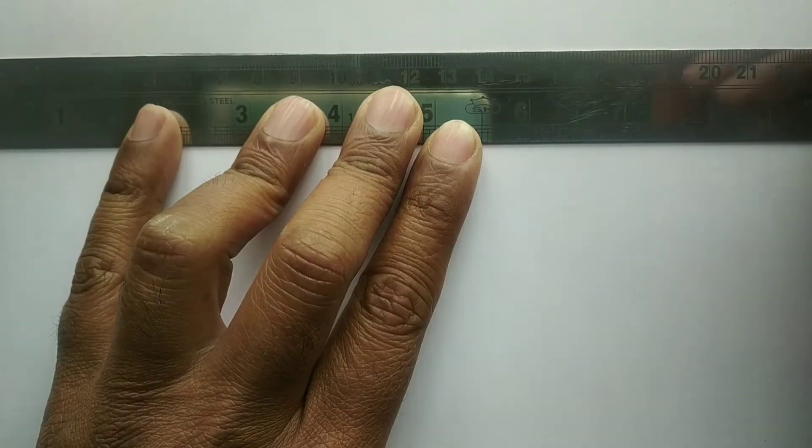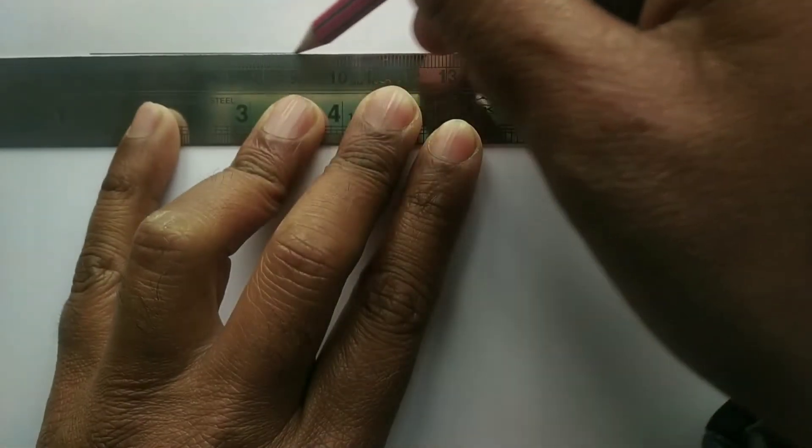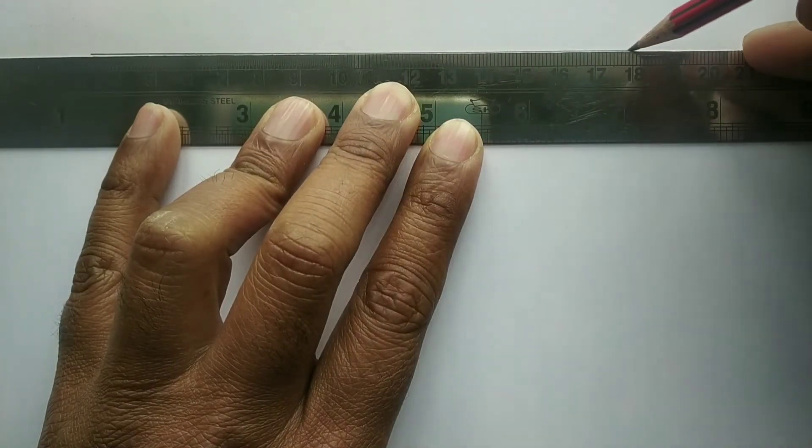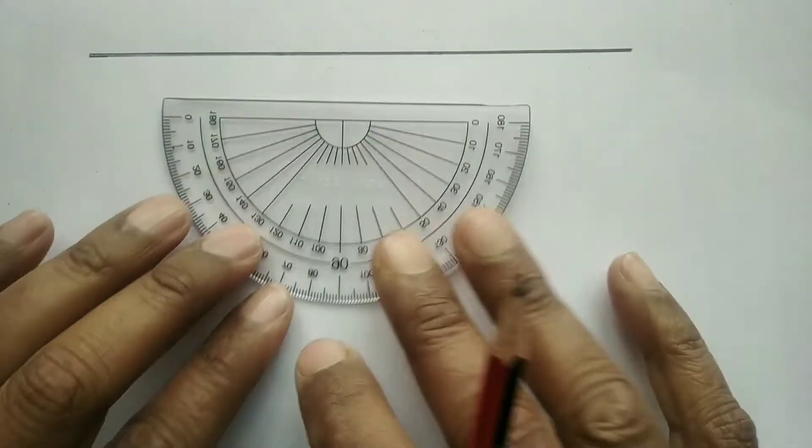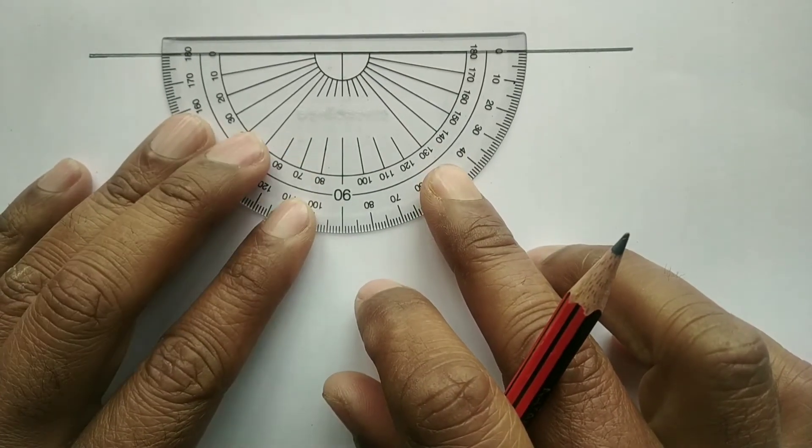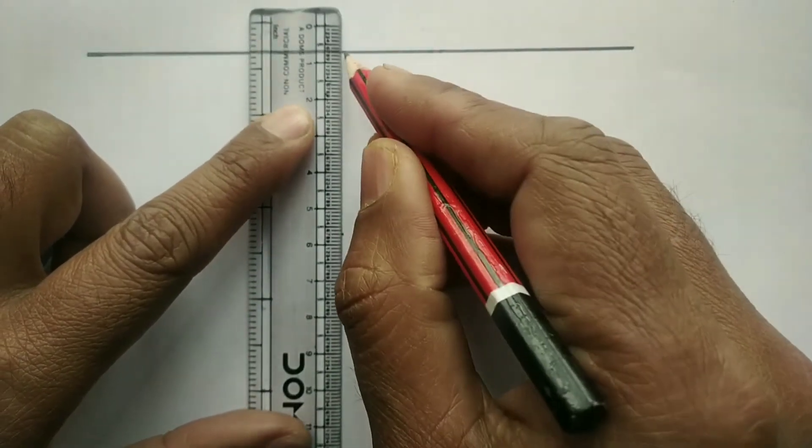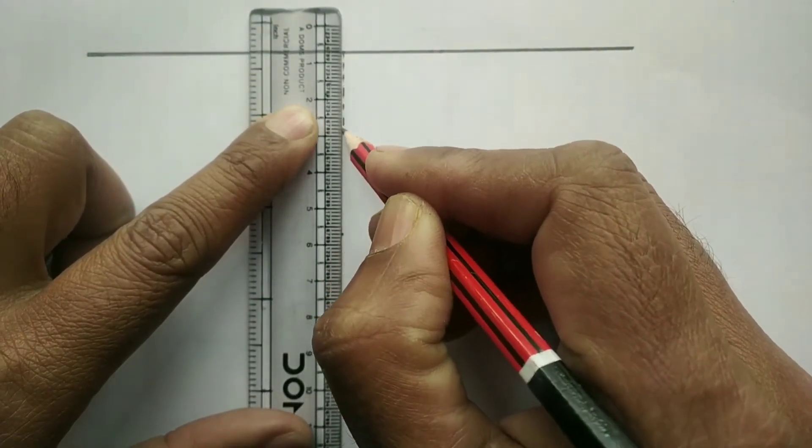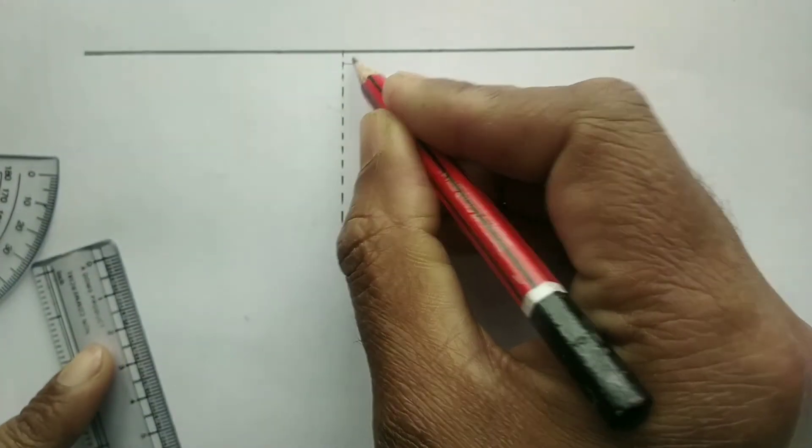Initially, we need to make use of a scale so as to draw a line parallel to the length of the white sheet. Thereafter, we need to draw a normal at this particular point. So, we make use of a protractor and we draw a normal. Normal students, it's an imaginary line which is perpendicular to the given surface. So, this is the normal. It has to be represented by dotted line.